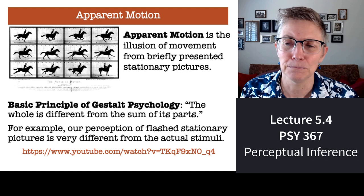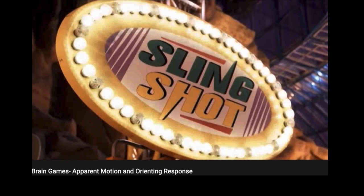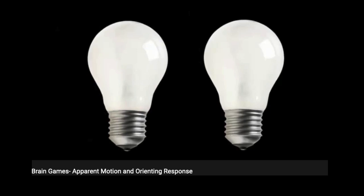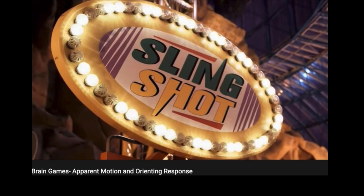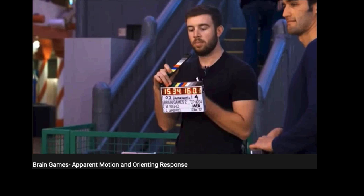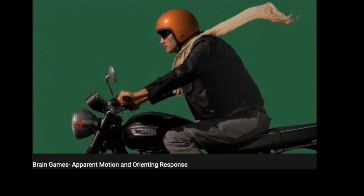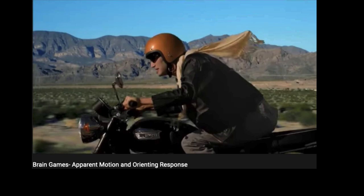I'll show you an example of apparent motion. We've all seen signs where the lights appear to be moving — but how exactly can a light bulb be in motion? Imagine two lights: first one turns on and off, then the next turns on and off. What most people perceive is motion. Your brain pieces together the motion from one spot to the next. Every time you watch a movie or your favorite TV show, your brain is being tricked into seeing motion that isn't really there. You're seeing a series of still images strung together very quickly so your brain perceives motion. This is called apparent motion.